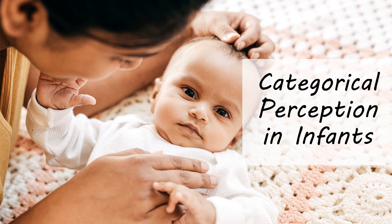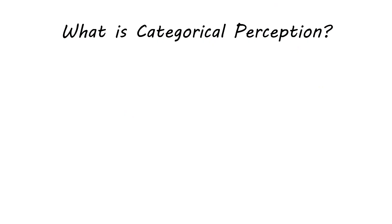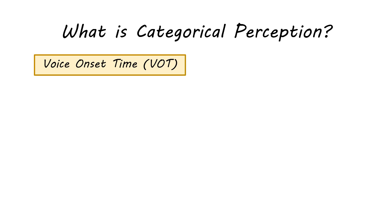Hello and welcome to another lesson on language development. In this lesson we're going to talk about something called categorical perception in infants and whether that is innate or whether that is entirely learned. The first question we have to answer is what is categorical perception? I'm going to demonstrate this using a phonetic variable called voice onset time. You can have categorical perception based on all kinds of variables, but this is an easy one to illustrate.